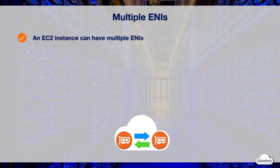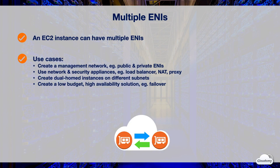An EC2 instance can have multiple ENIs attached to it. Here are some common use cases for multiple ENIs: You may want to create a managed network by using public and private ENIs and security groups for your instance. You can use network and security appliances with multi-ENI configuration, such as load balancers, NAT devices, and proxy servers. You can create dual-homed EC2 instances with workloads in different subnets. With multiple ENIs, you can create a low-budget, high-availability solution, which enables quick failover by attaching the ENI to the standby instance.